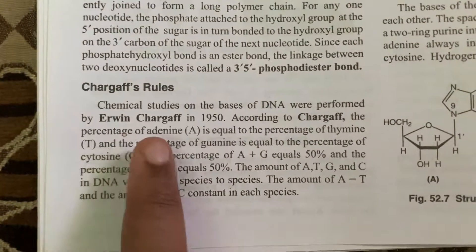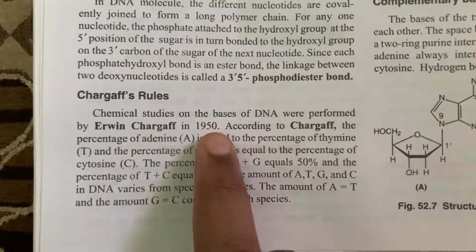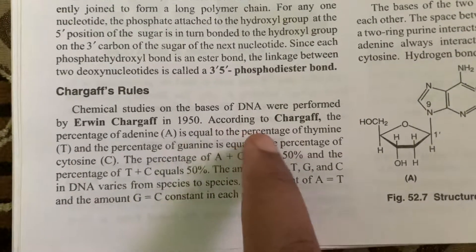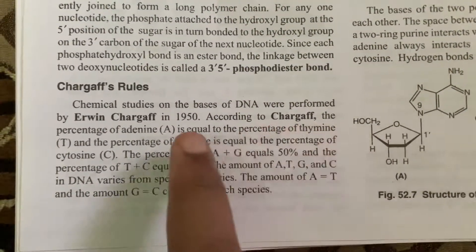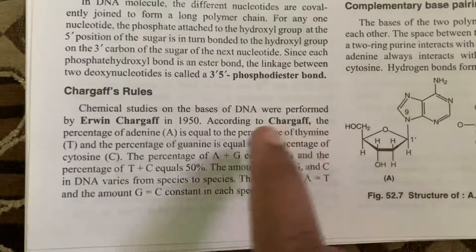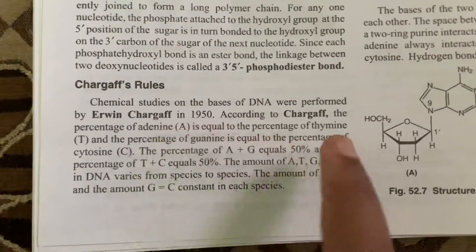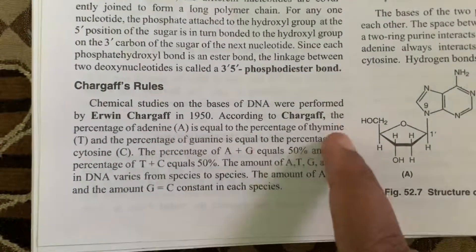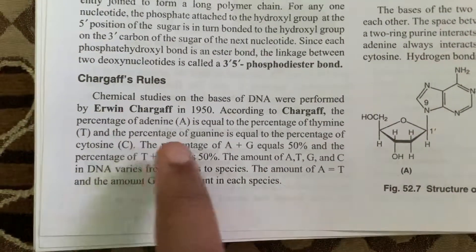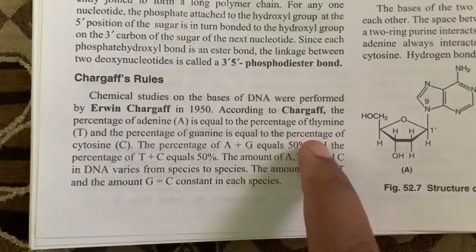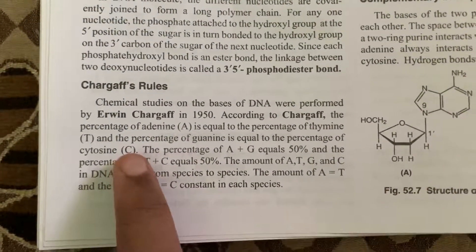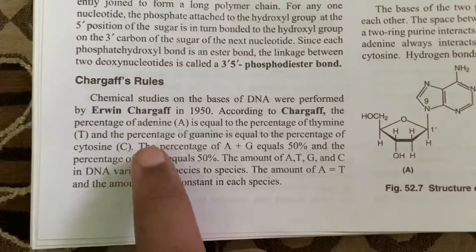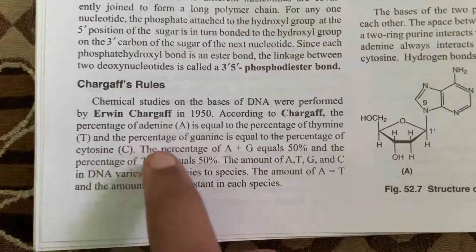This was performed by Erwin Chargaff in the year 1950. According to Chargaff, the percentage of adenine is equal to the percentage of thymine, because adenine will always bond with thymine. So the number of adenine will always equal the number of thymine. Adenine is represented as A, thymine as T. The percentage of guanine is equal to the percentage of cytosine, because cytosine will always bond with guanine.